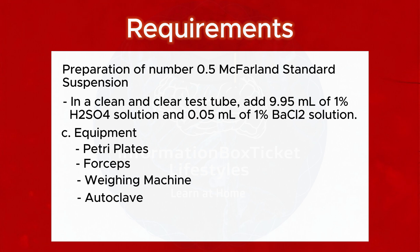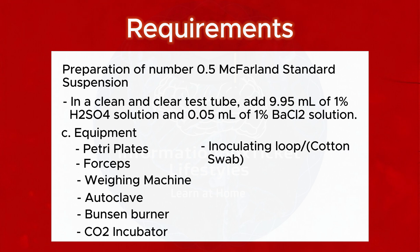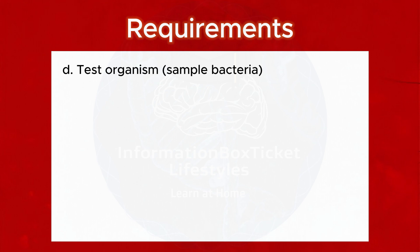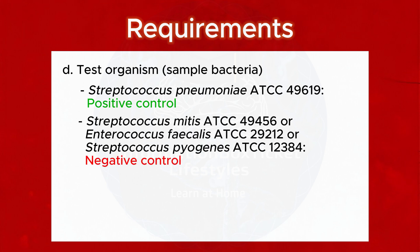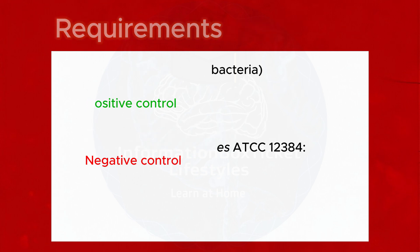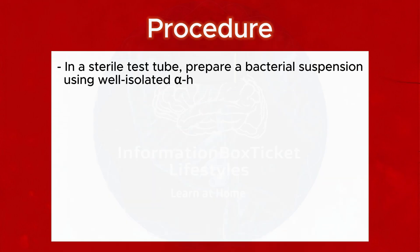Equipment: petri plates, forceps, weighing machine, autoclave, Bunsen burner, CO₂ incubator, inoculating loop, cotton swab, PPE, and other laboratory materials. Test organisms: sample bacteria — Streptococcus pneumoniae ATCC 49619 (positive control); negative controls — Streptococcus mitis ATCC 49456, or Enterococcus faecalis ATCC 29212, or Streptococcus pyogenes ATCC 19615.